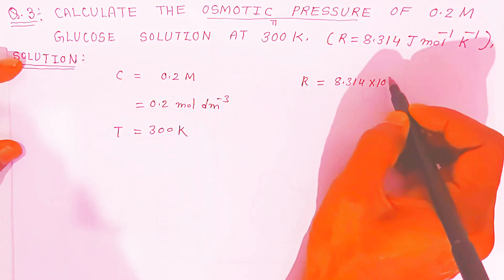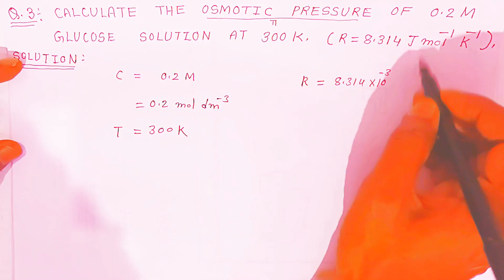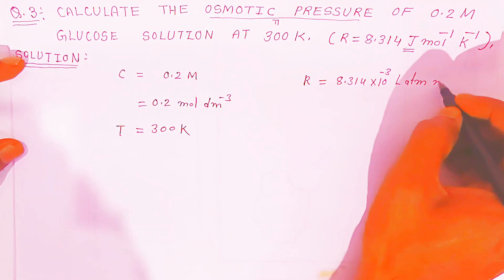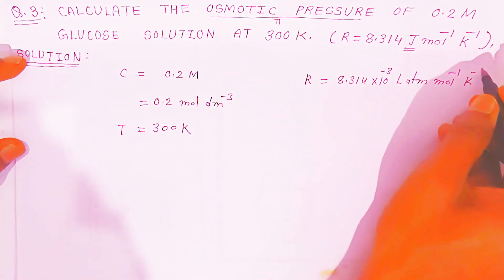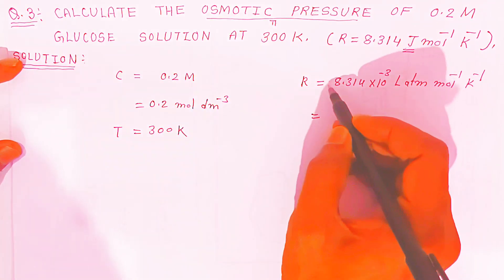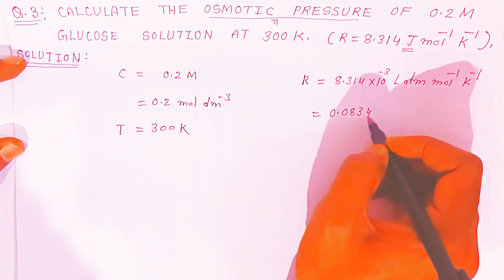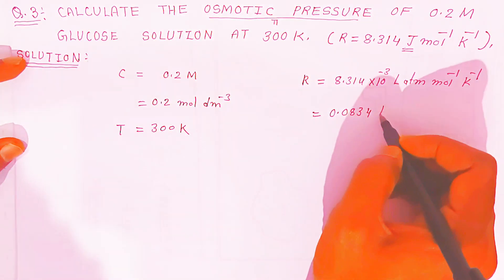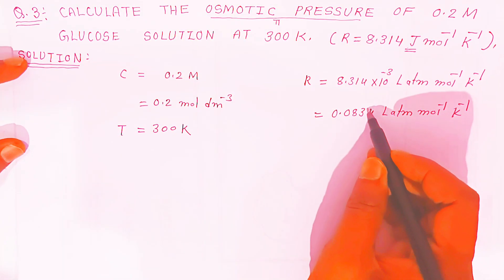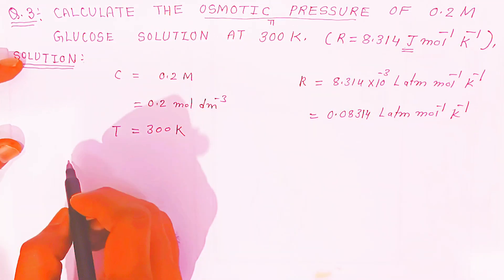This Joule is going to be converted into liter atmosphere per mol per kelvin. This will be the value of R, when you divide this decimal will shift here, so it will come 0.08314 liter atmosphere per mol per kelvin. This is the universal gas constant. Now what is the formula?